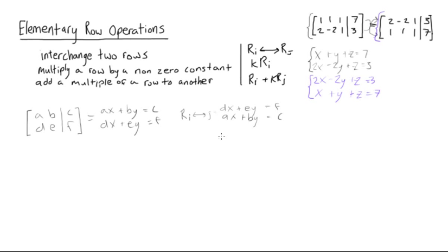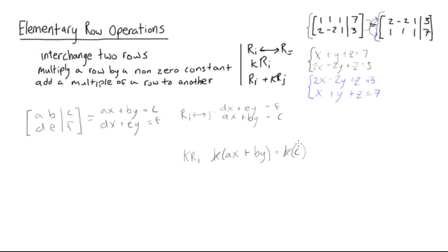Now let's do the next one: multiplying a row by a nonzero constant. We write this as k times r_i. Say we take the row ax + by = c and multiply everything in this row by k on both sides. We get k(ax) + k(by) = kc. We can then divide both sides by k and we still get ax + by = c. So multiplying a row by a nonzero constant works with no problem in any situation.